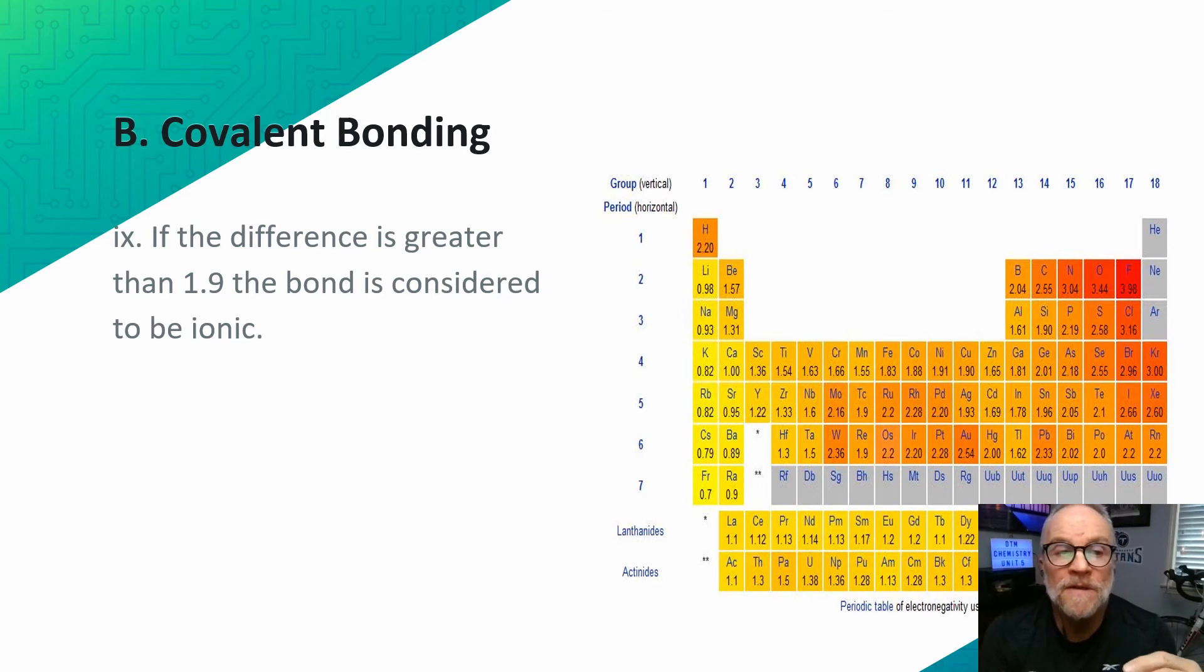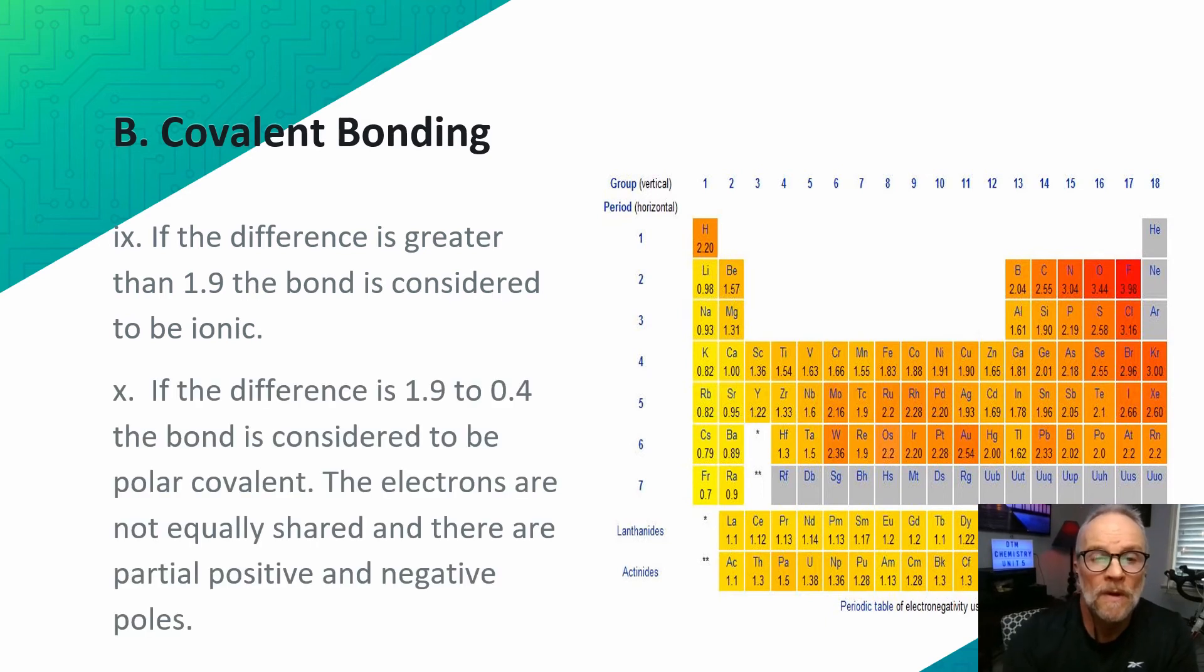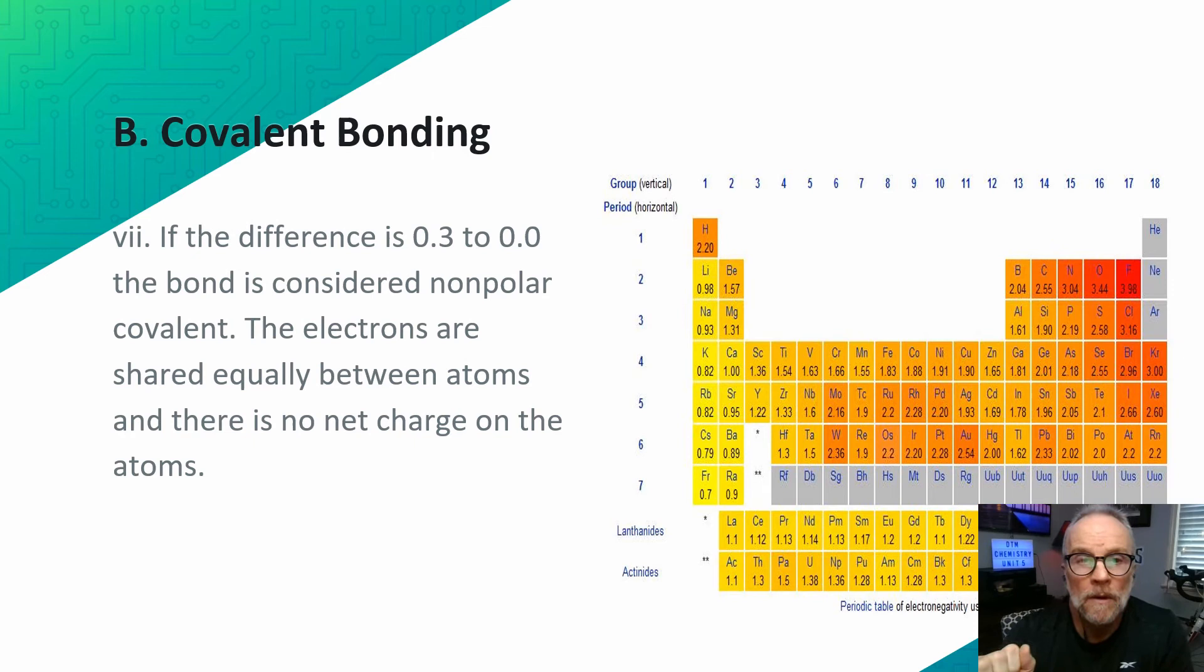Here's the difference. If the difference is greater than 1.9, the bond is considered ionic. If the difference is between 0.4 and 1.9, the bond is considered polar covalent. The electrons are not equally shared, and there are partial positive and negative poles. If the difference is between 0.3 and 0, the bond is considered non-polar covalent. The electrons are shared equally between the atoms, and there's no net charge on the atoms.